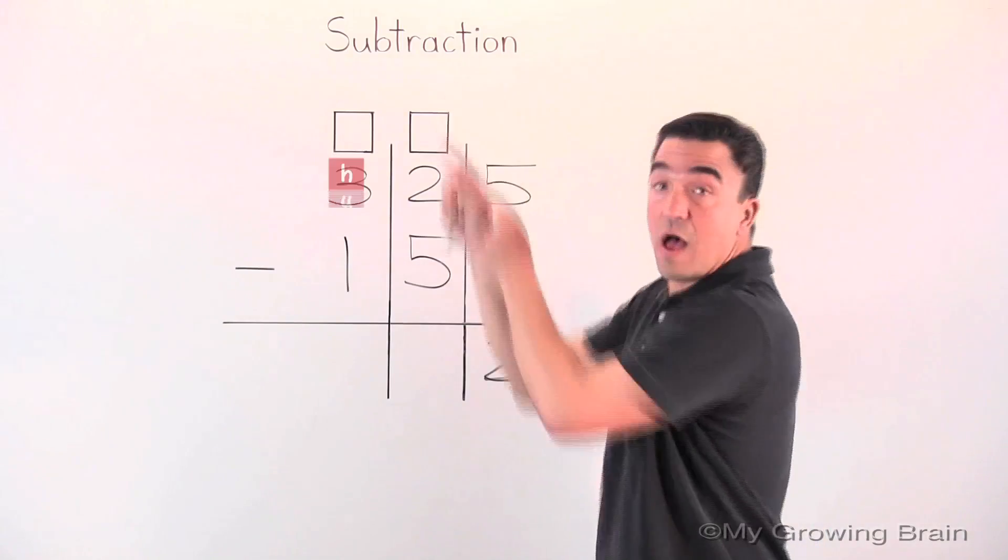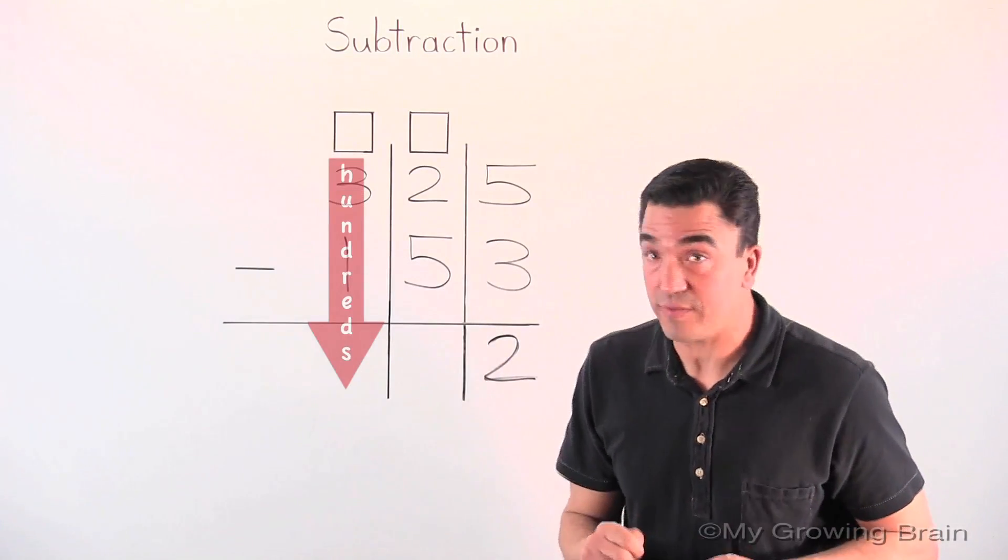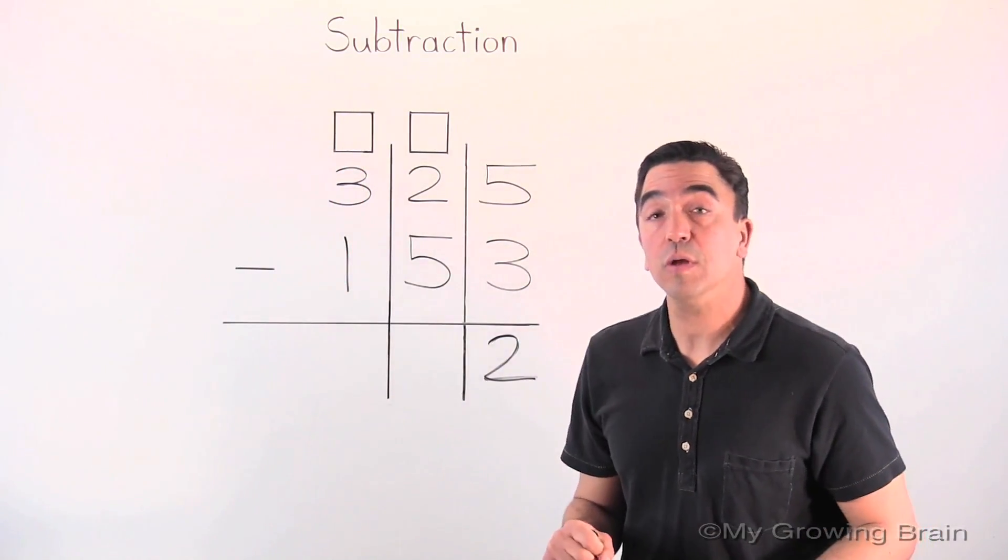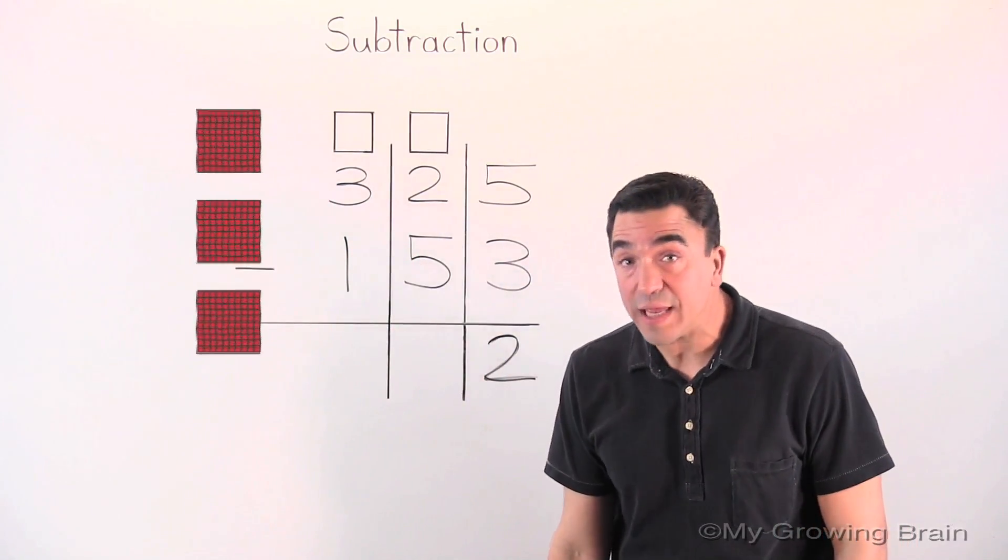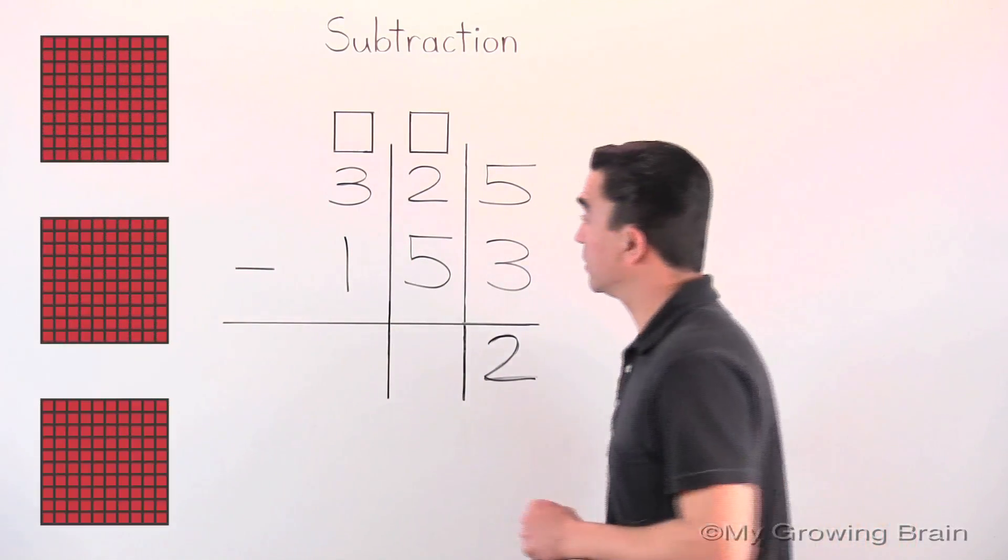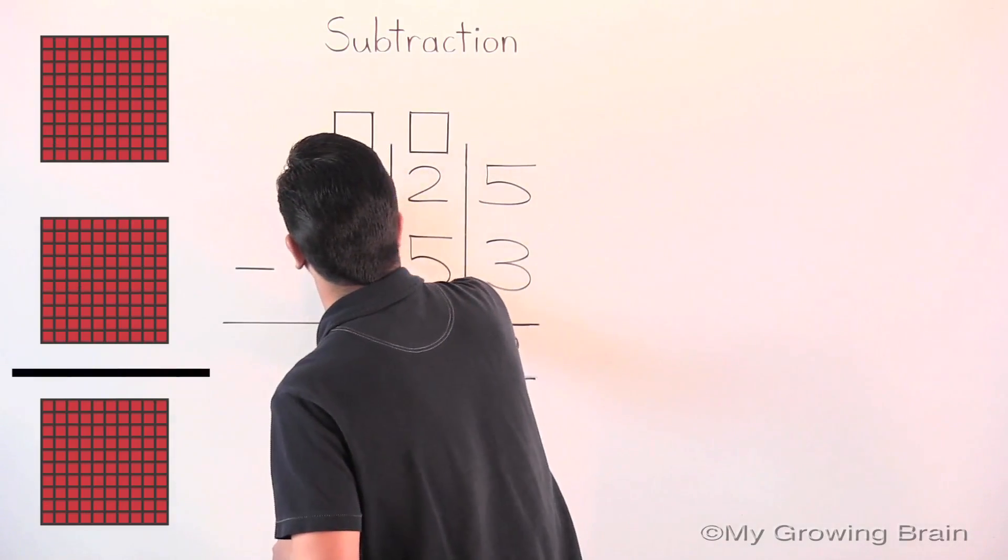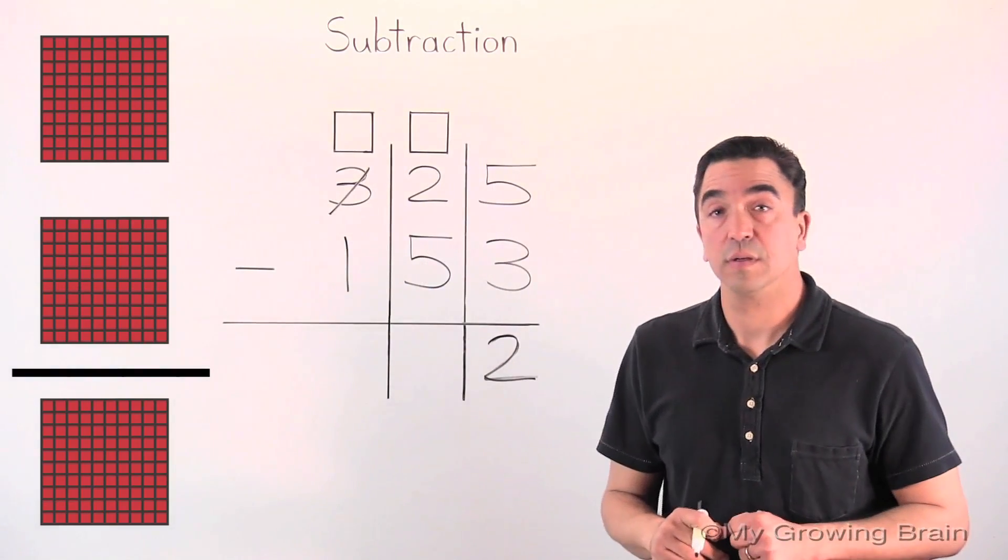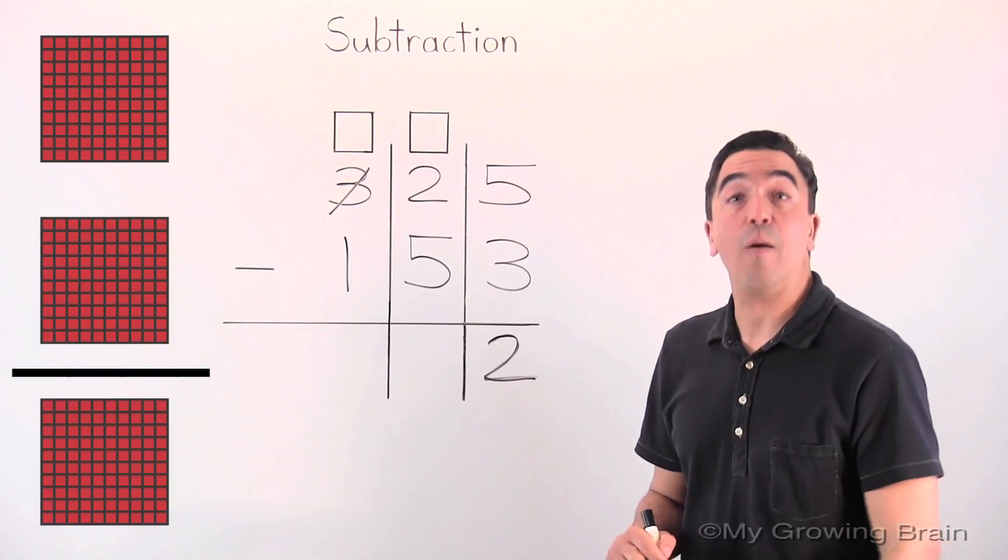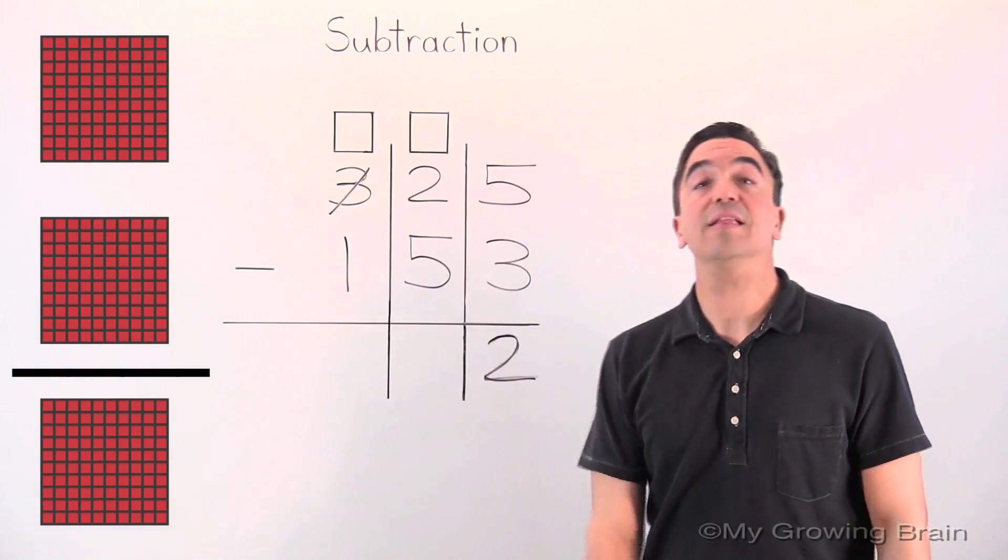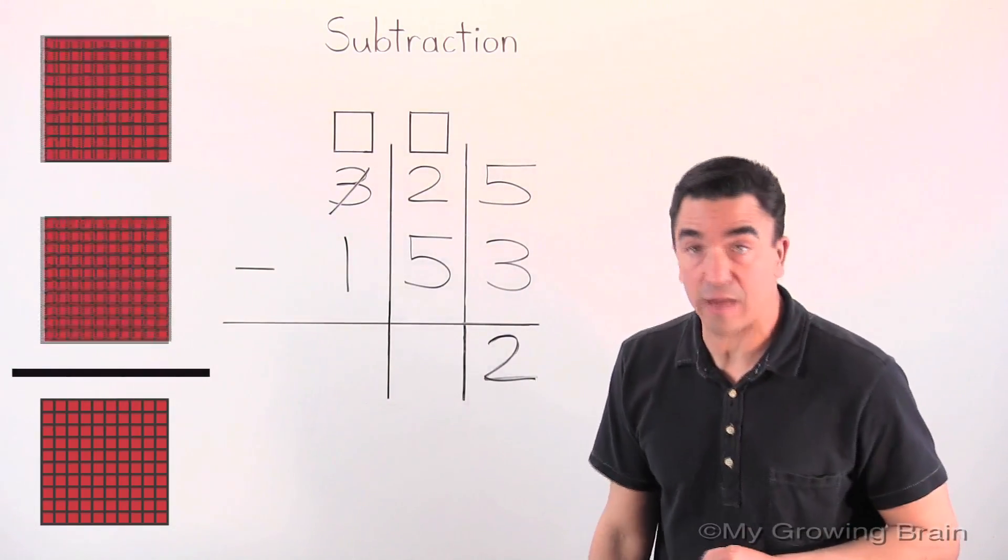So, let's go into the hundreds place. And we're going to borrow one of these three hundreds. Now, there's two left. And we're going to put the two in the regrouping box.